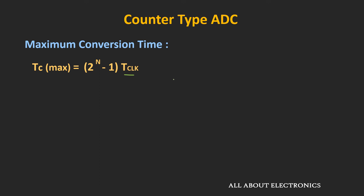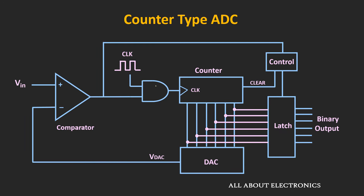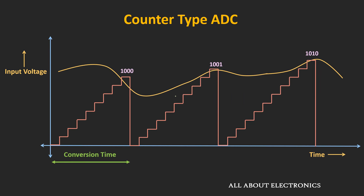The maximum allowable clock frequency is restricted by the response time of the components of the ADC. Basically, this type of ADC is slow because the counter gets reset after each conversion. But if the counter doesn't reset after the conversion, and rather it tracks the input by going up or down from its current position, then the conversion would be much faster. And exactly the same principle is used in the tracking type ADC, which we will discuss in the next video.